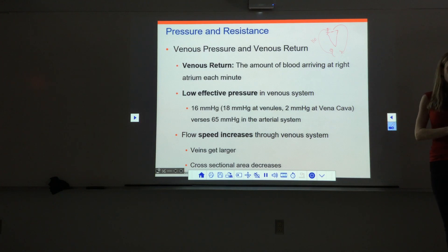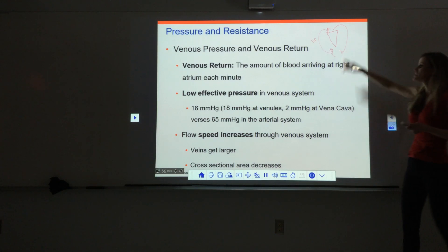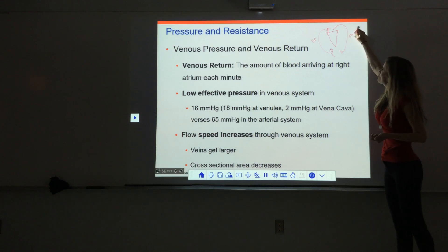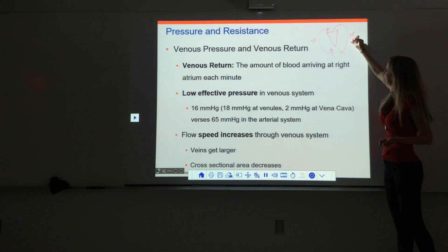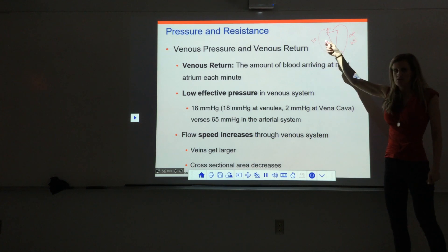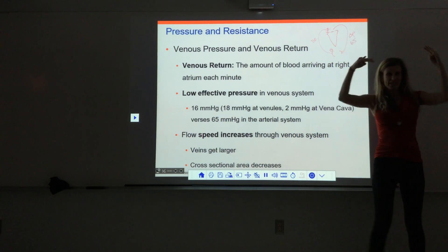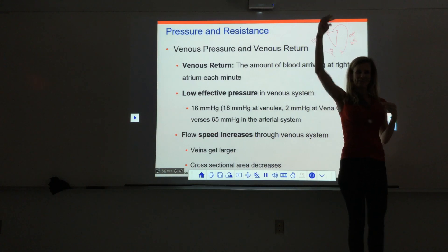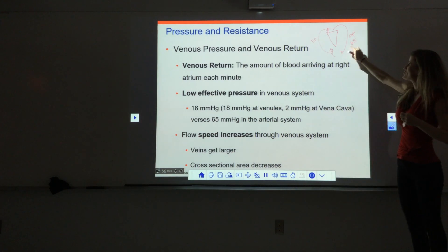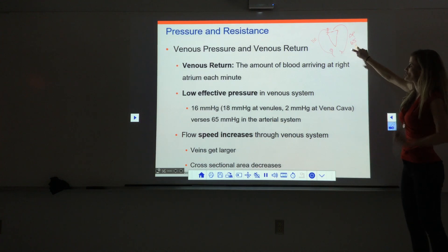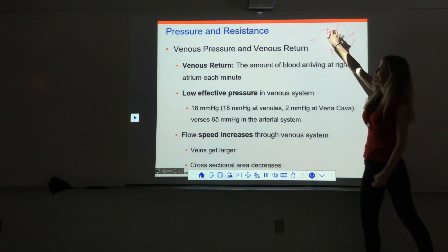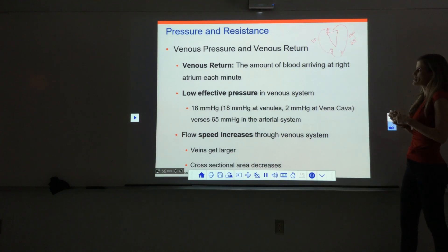When we look at the arterial system, it's about 65 millimeters of mercury. So the delta P on the arterial side is 65 versus 16 on the venous side. Remember we looked at hills and said the steepness is more important than the total height. The arterial side is much steeper — a much bigger change in pressure pushing blood down to the capillaries. The venous pressure going back up to the heart is not very great.